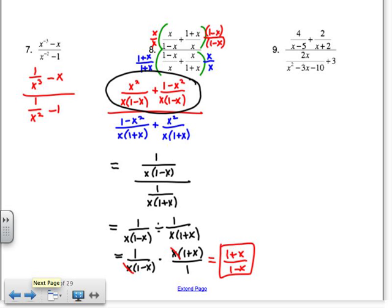Alright, and then number 7. Just remember on number 7 that if I have x to the negative 3, that's 1 over x cubed, right? So start that one out like this. And then multiply by the LCD, least common denominator, of x cubed.